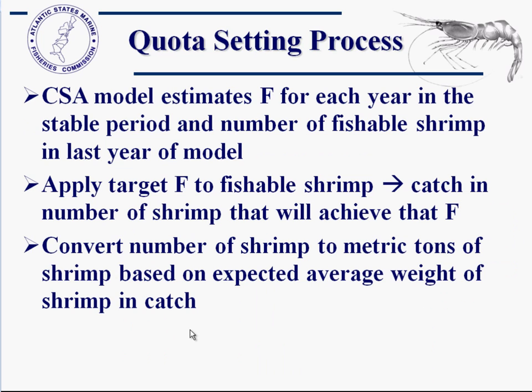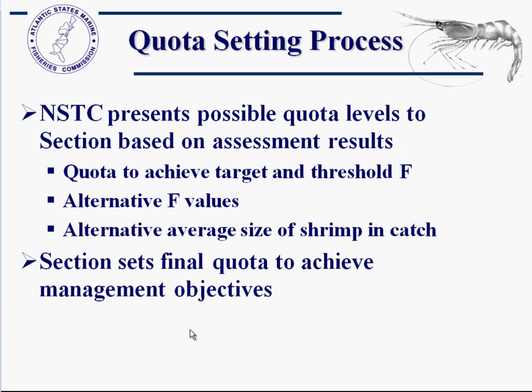The CSA model estimates F in each year for this stable period as well as all other years in the model. It also estimates the number of fishable shrimp for all years including the last year. We apply this target F to our estimate of fishable shrimp, which gives you the catch in number of shrimp needed to achieve the target F. Then you convert the number of shrimp to metric tons based on the average weight of shrimp in the catch, using sampling from the summer survey and historical data on how that size structure translates into catch the following year.